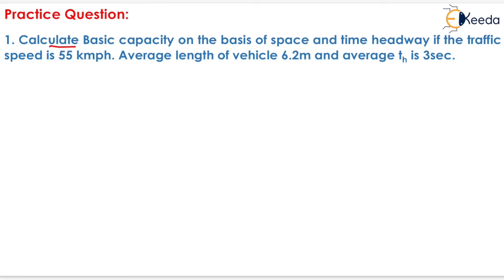Question is given as calculate basic capacity on the basis of space and time headway if the traffic speed is 55 km per hour, average length of vehicle is 6.2 meter and average th is 3 seconds.